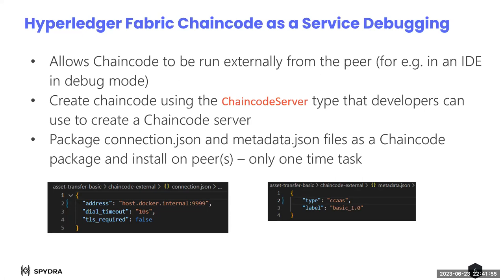Starting with Hyperledger Fabric 2.x there is a different model giving more control over how chain code is built, which is the concept of external builders. There is also the concept of running the chain code yourself — you run it in your own container and instruct the peer node to connect to it. You are literally responsible for building, hosting, and running the chain code, then you instruct the peer to connect and submit requests to it.